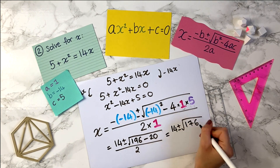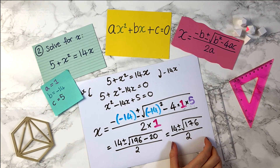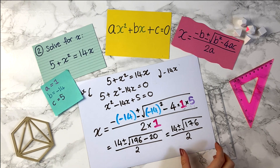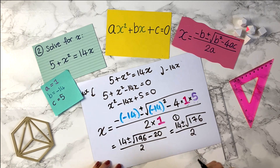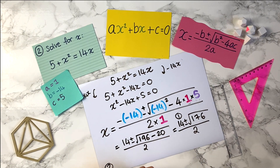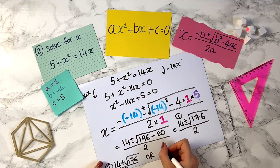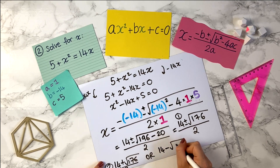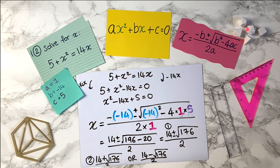Divided by 2 times 1 is 2. That equals 14 plus or minus the square root — 196 minus 20 is going to be 176 — all over 2. So this is an answer you can give if they want it in exact surd form — this is perfect as an answer. Option one is this combined form; option two is you can write 14 plus the square root of 176 all over 2, then write 'or', and then write the other option. Remember there are two answers here. Or you can put it in your calculator and get the decimal forms rounded to however many decimal or significant figures they want.